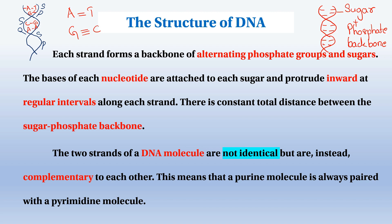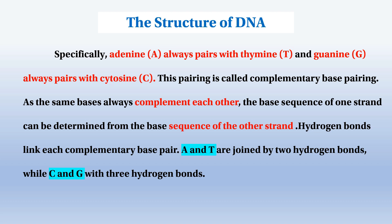The two strands of the DNA molecule are not identical but are complementary to each other. This means that a purine molecule is always paired with a pyrimidine molecule. Specifically, adenine (A) always pairs with thymine (T) and guanine (G) always pairs with cytosine (C). This rule is called complementary base pairing.